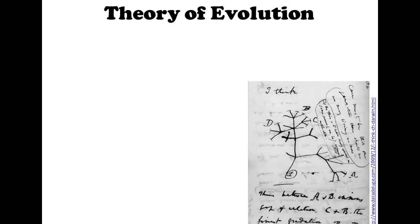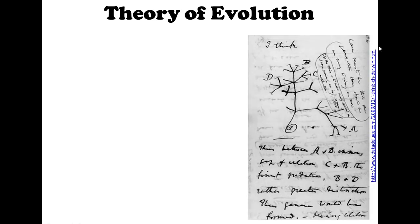Now we're going to talk about the theory of evolution — this is what he came up with, his life's work. Here is actually an image of his actual sketches from one of his books. You can see there's like a little tree, where he was sketching how these birds were still related but different — they kind of split into different species. They have a common ancestor but split over many generations.